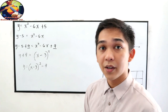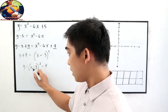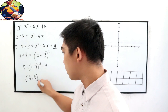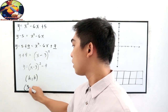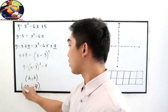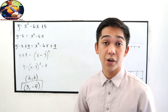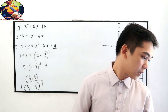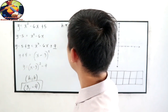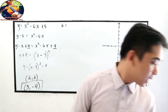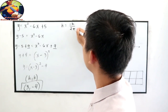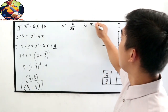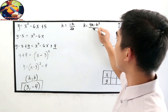Our vertex form is y is equal to (x minus 3) squared minus 4. Our vertex (h, k) is therefore (3, negative 4) — this is the turning point of the parabola. Now let us verify using the formula. To find h, we use negative b over 2a, and to find k, we use (4ac minus b squared) all over 4a.